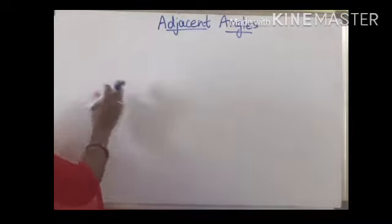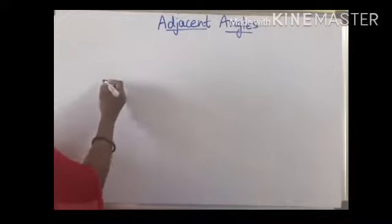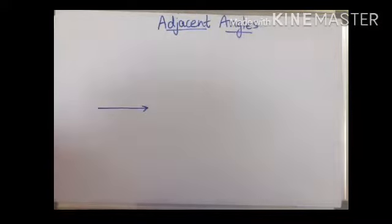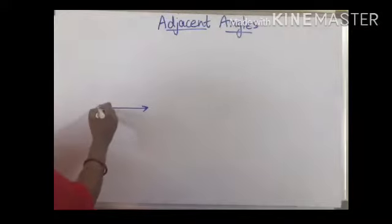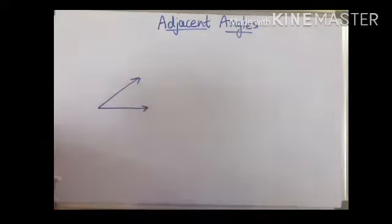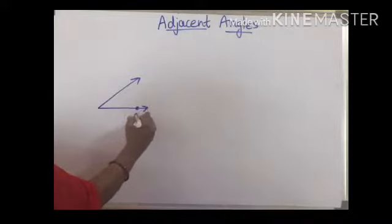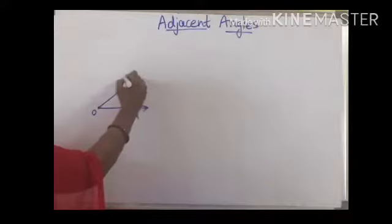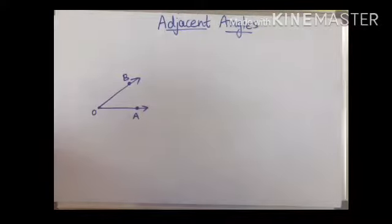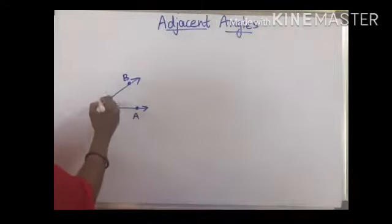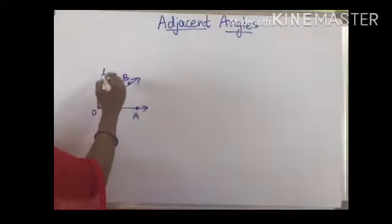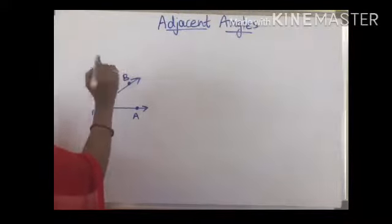Coming to adjacent angles, if I draw an angle here — you know an angle is a combination of two rays. If I draw an angle like this, suppose this is A, this is O, and this is B. Now I am going to draw one more ray here. So this is C.